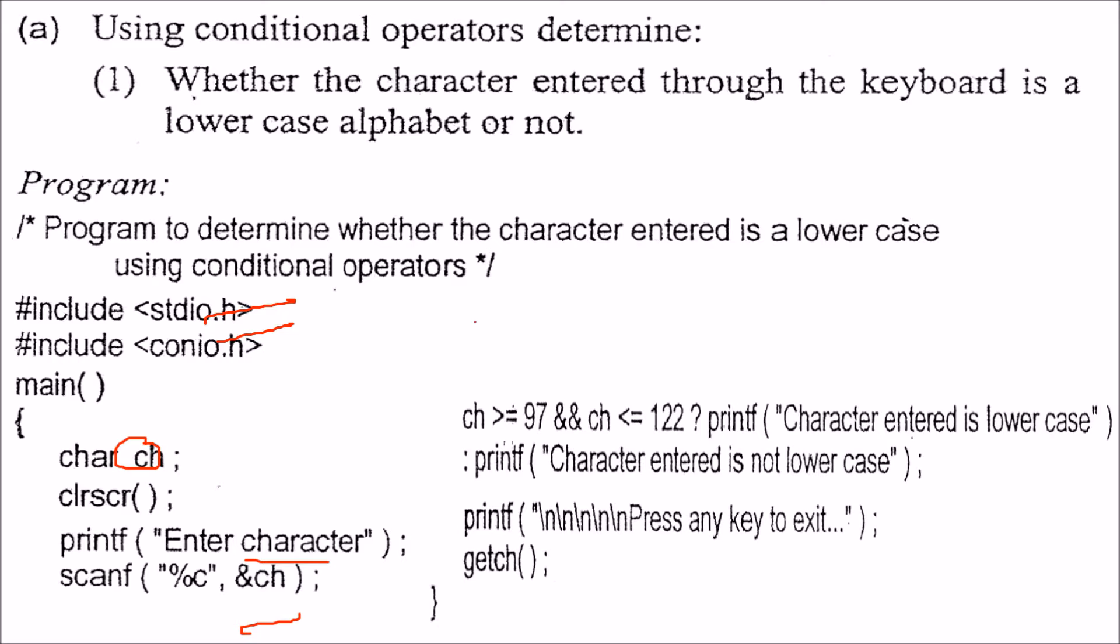This character will be checked. So if this character is greater than equal to 95 and it is less than 125, we use the AND operator. It has to be both simultaneously true, left and right hand side of the AND operator.